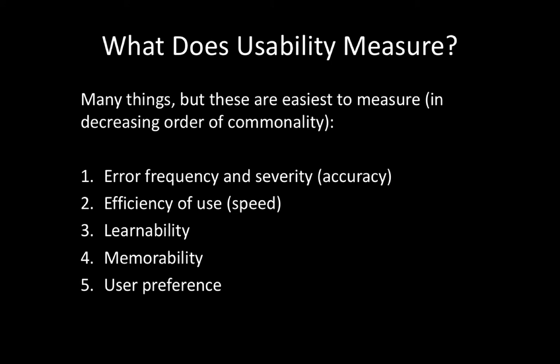Speed is obviously impacted by errors — if people make a bunch of mistakes it can slow them down — but speed is also just how long it takes to do the task, maybe even without mistakes. You may have to go through 20 different screens and that can take a long time. Speed and accuracy are very easy to measure: use a timer for speed and count mistakes for accuracy.